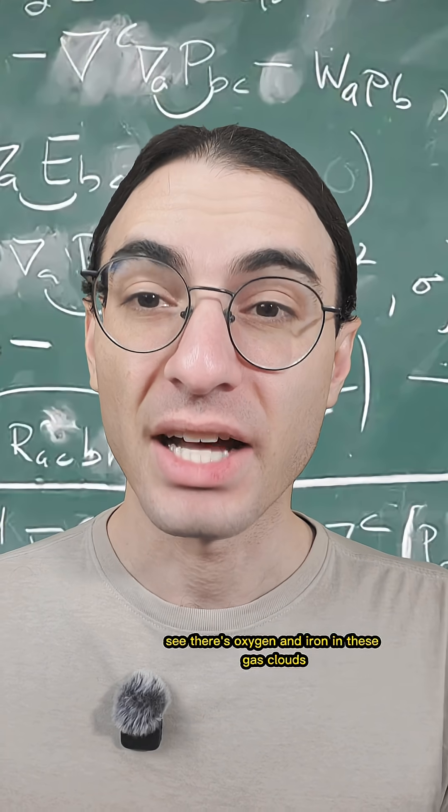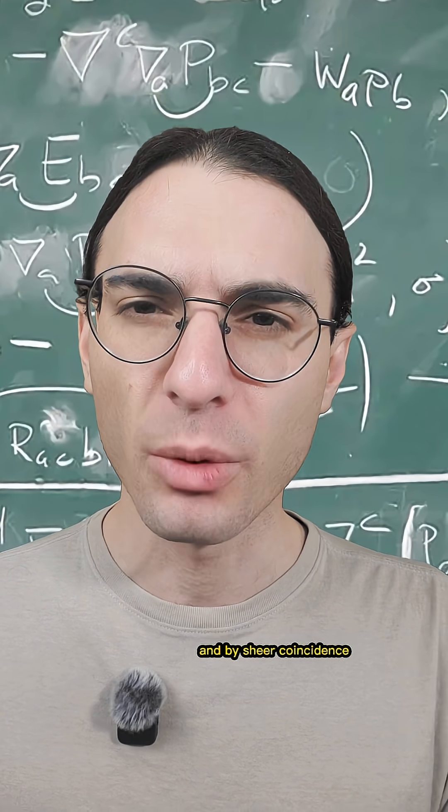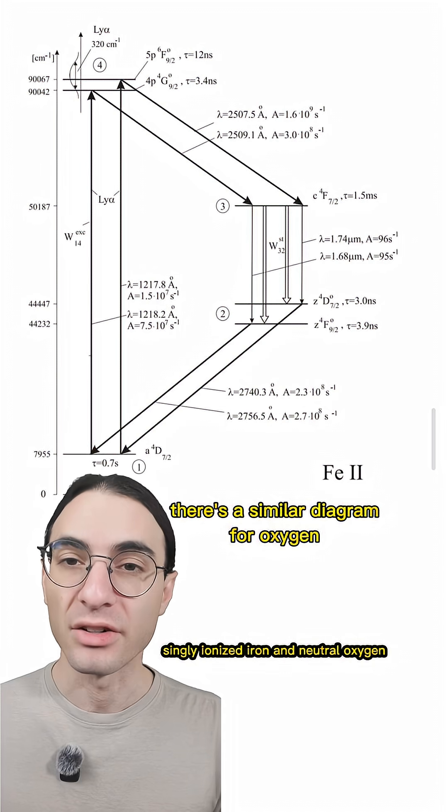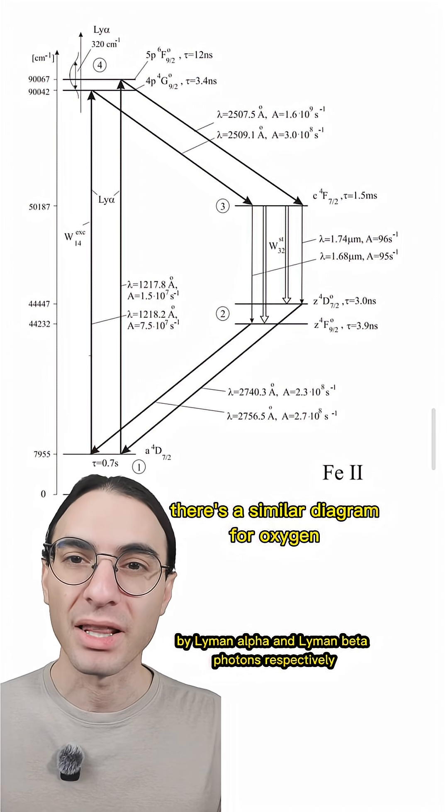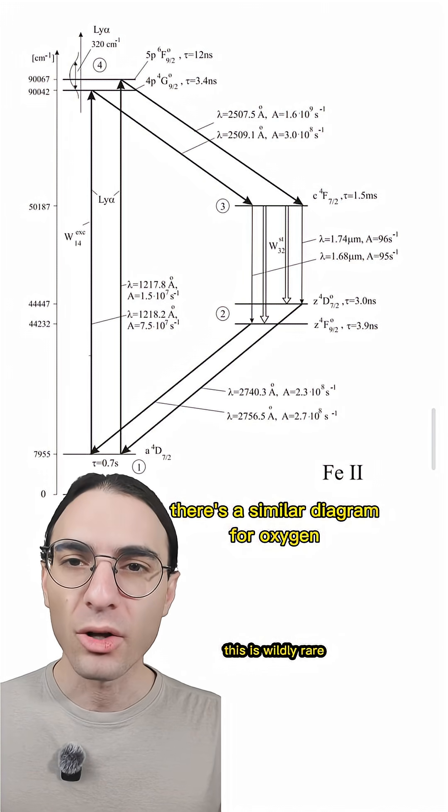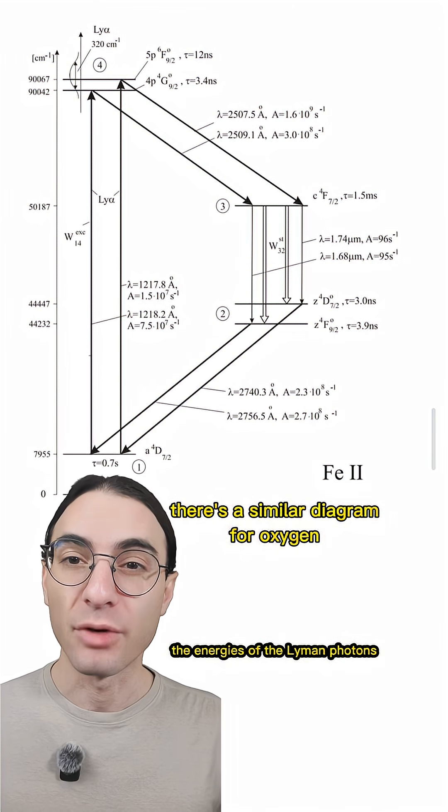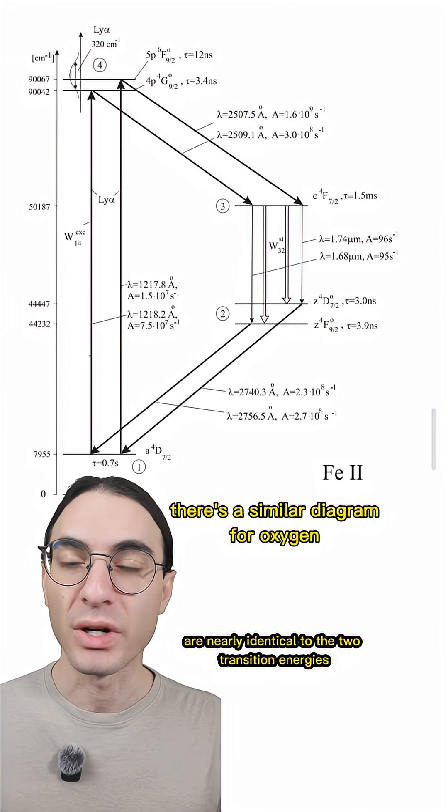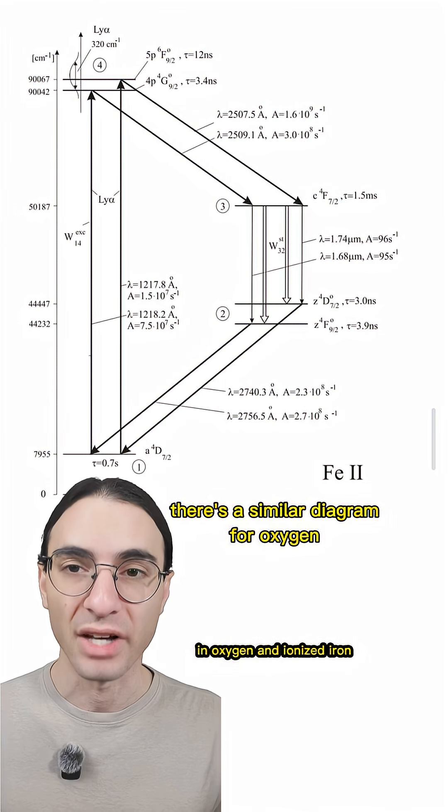See, there's oxygen and iron in these gas clouds, and by sheer coincidence, singly ionized iron and neutral oxygen both can be excited by Lyman alpha and Lyman beta photons respectively. And I should be super clear, this is wildly rare. The energies of the Lyman photons are nearly identical to the two transition energies in oxygen and ionized iron.